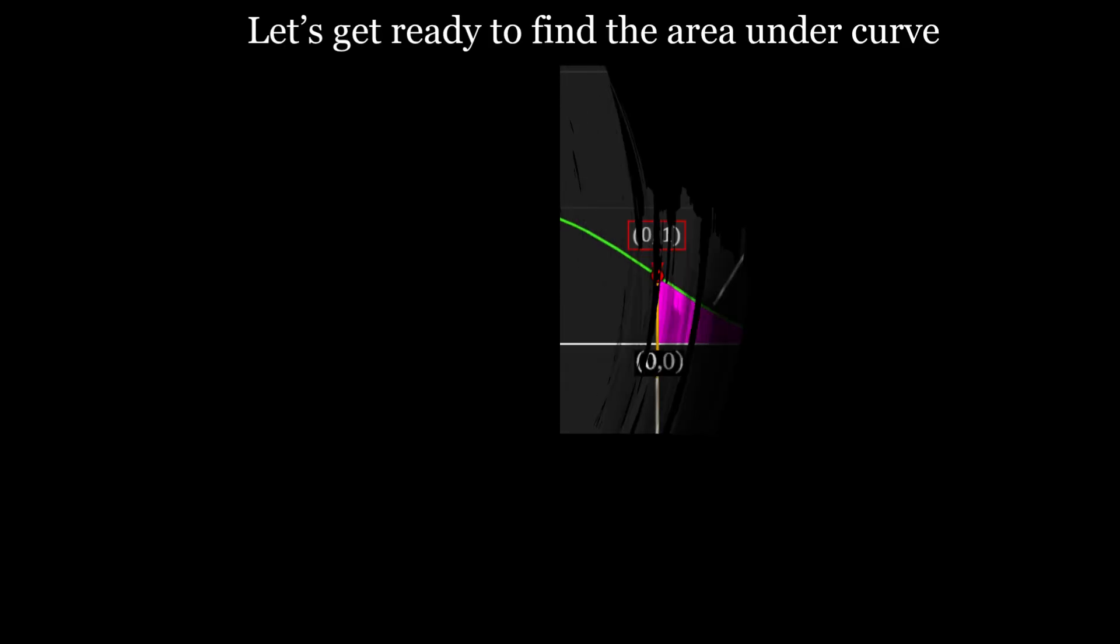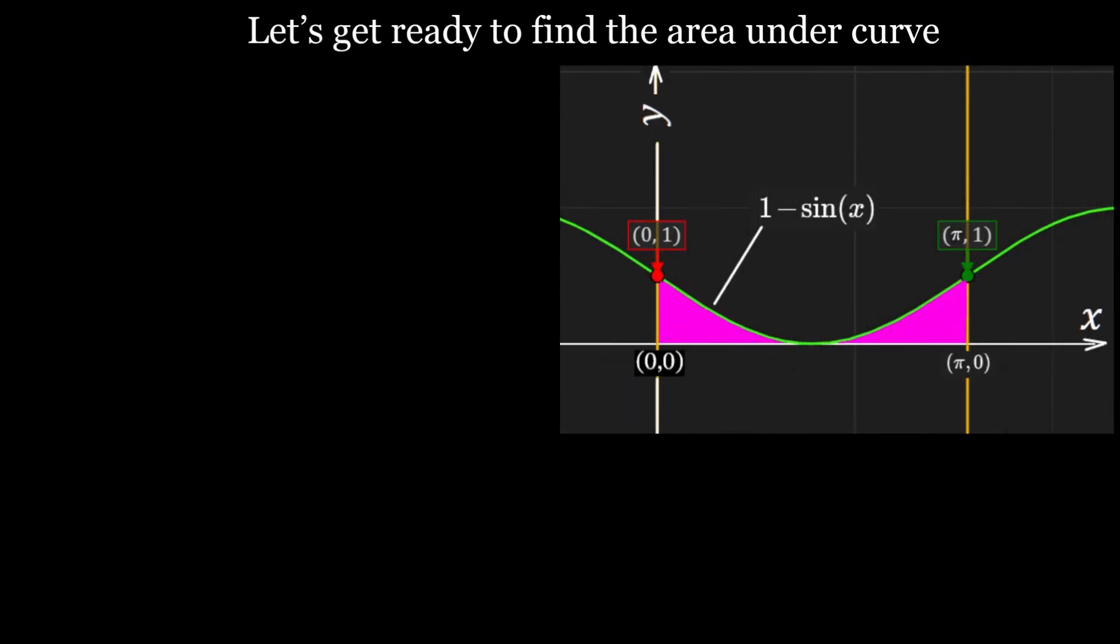Now, we're ready to find the area under the curve. As we mentioned at the beginning, the shown magenta area under the curve is calculated by the definite integral of our function, one minus sine of x from zero to pi.